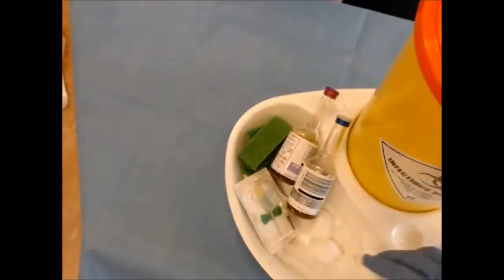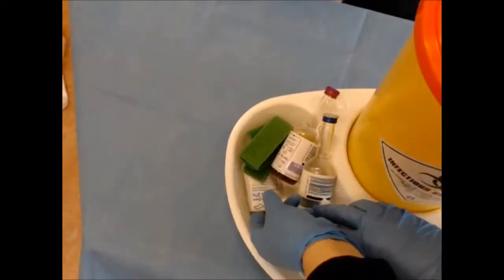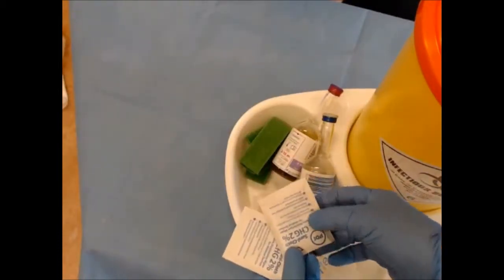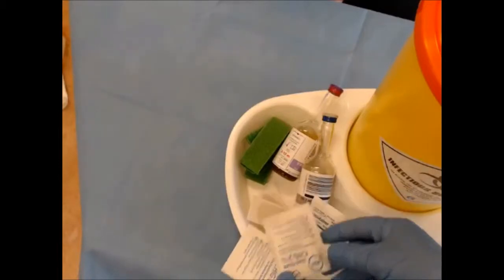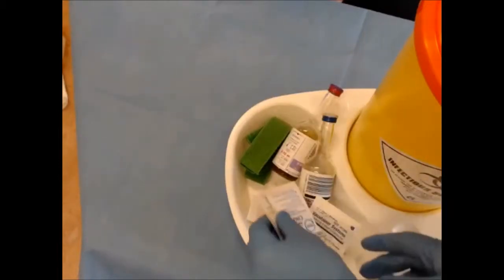You will need a disposable tourniquet. You will need something to clean both the patient and the blood collection bottles with. So we use alcohol with chlorhexidine called sani cloths.